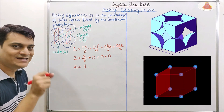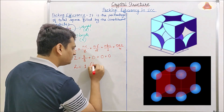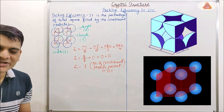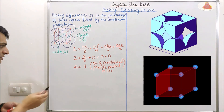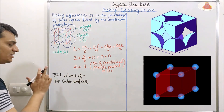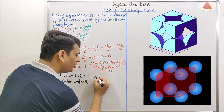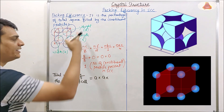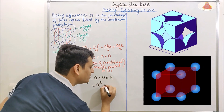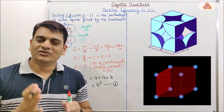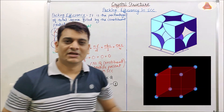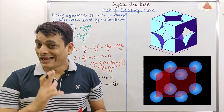Ultimately the value of Z is equal to 8/8, which equals 1. So 1 is the number of constituent particles present in this SCC. Now coming to the calculation of total volume of this cubic cell — total volume of the cubic unit cell is equal to width × length × height, which ultimately equals A³. This is equation 1. A is equal to 2R, as I have already discussed in my previous video (Part 4).